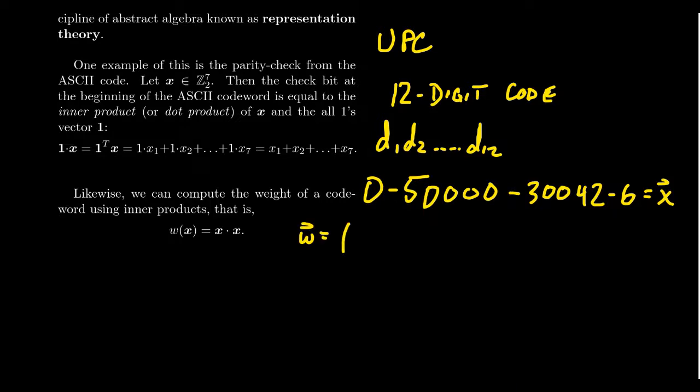Now I'm not going to really worry about the encoding process here, but I want to show you how a dot product can be used to check whether this is a valid UPC or not. To check this, for UPC, there's a weight vector associated to this. So if we call this message vector X, then there's a weight vector associated to this, which the weight vector is simple enough. It's 3, 1, 3, 1, and it just alternates 3, 1, 3, 1, all the way down to the end, 3, 1.